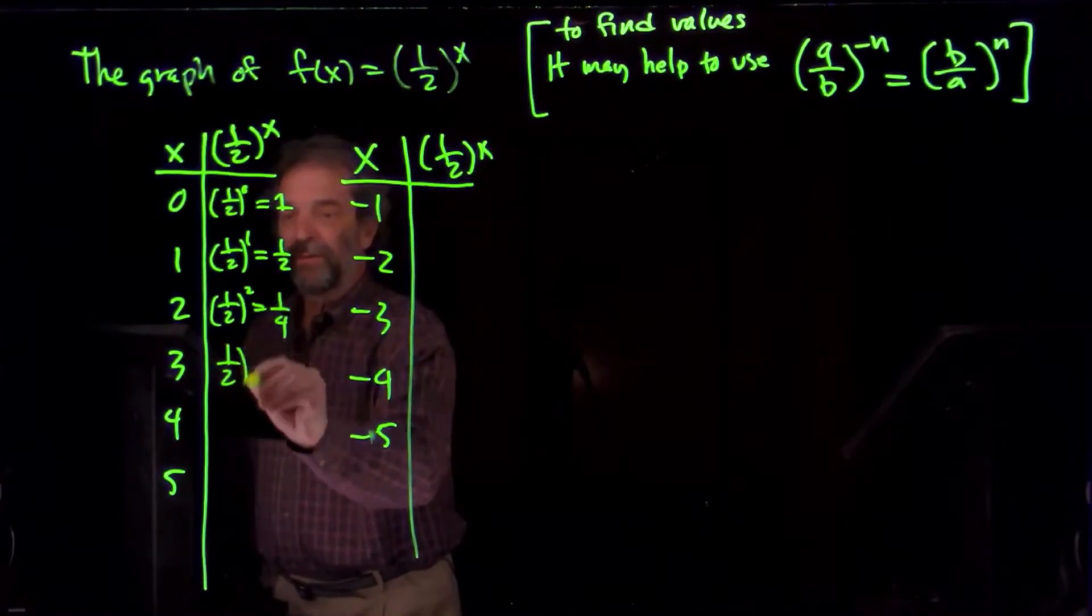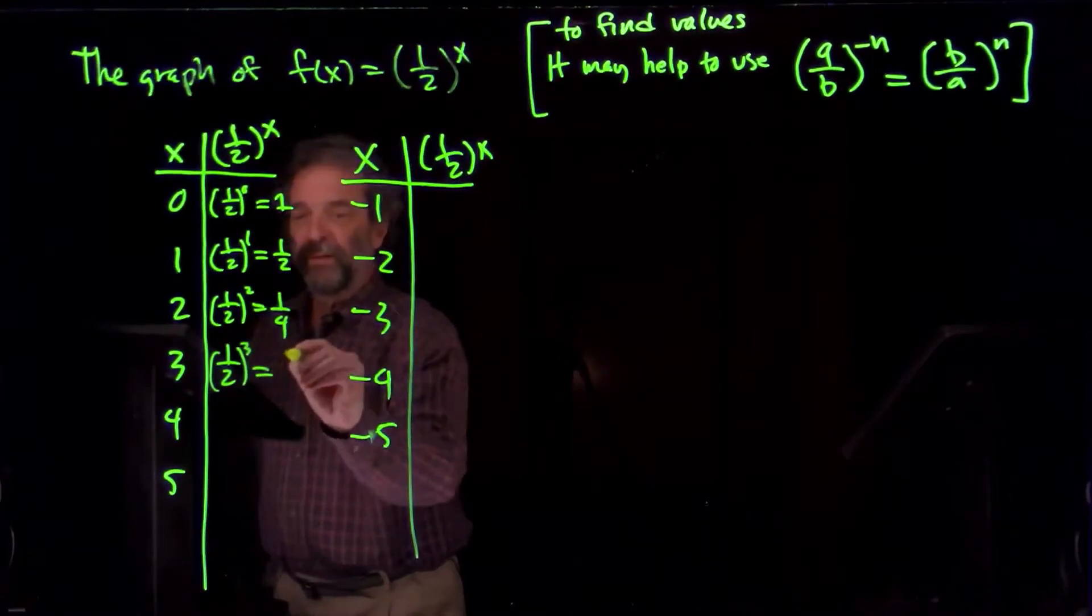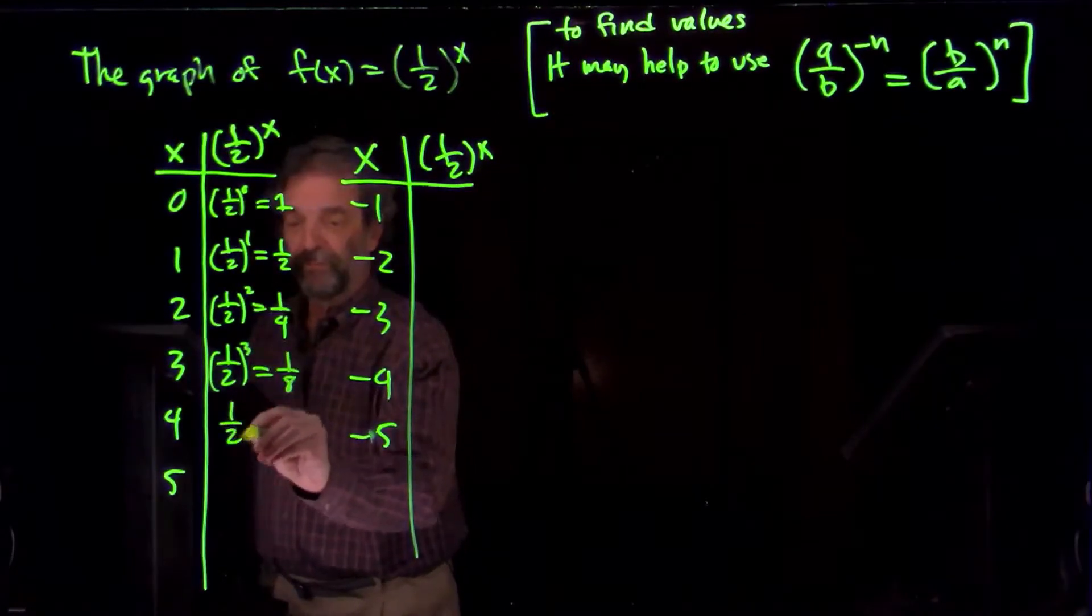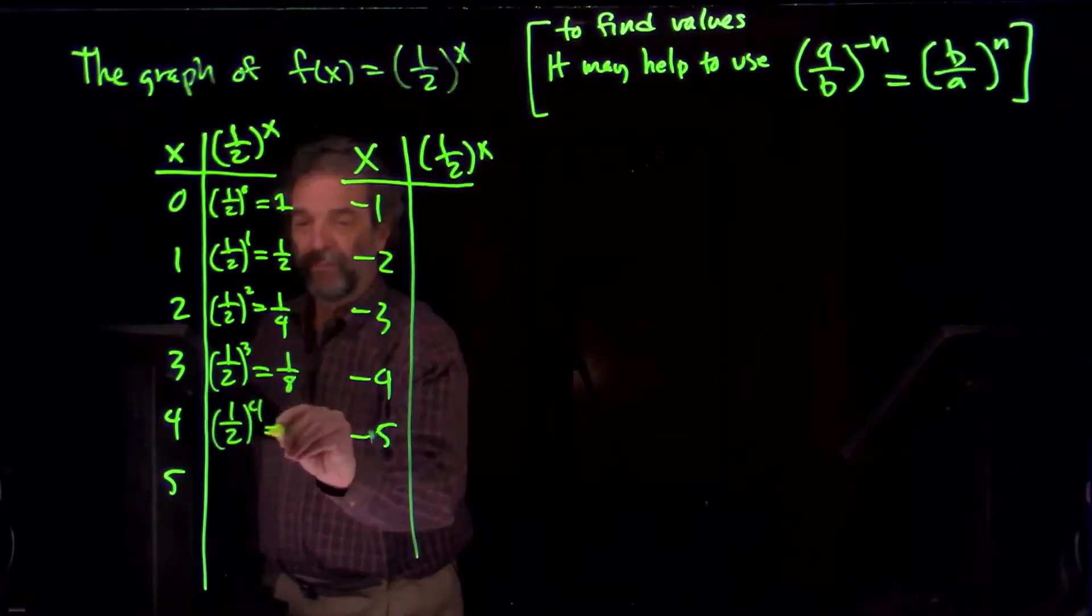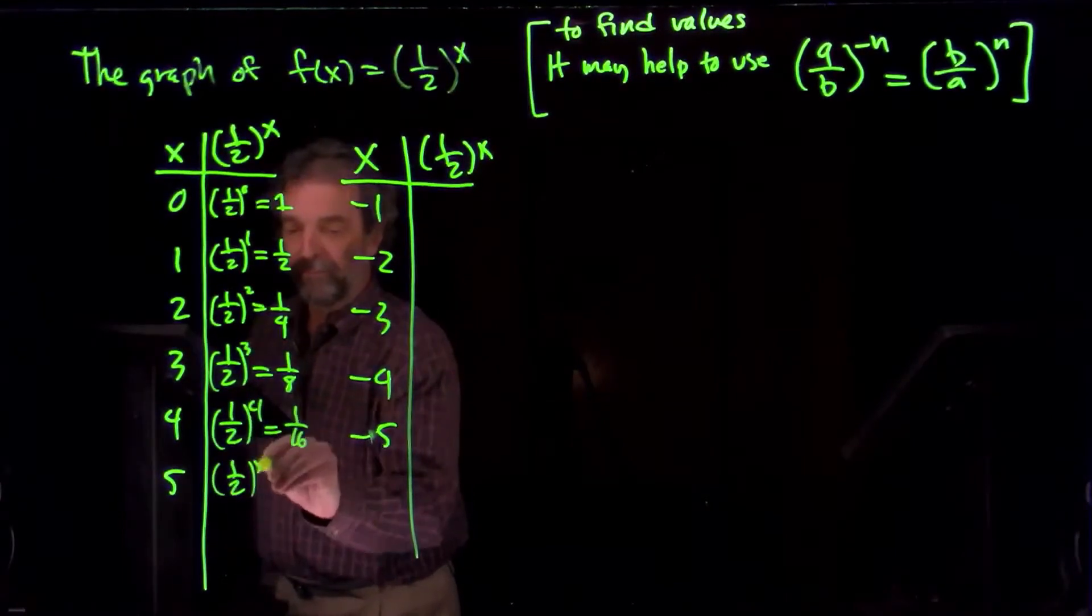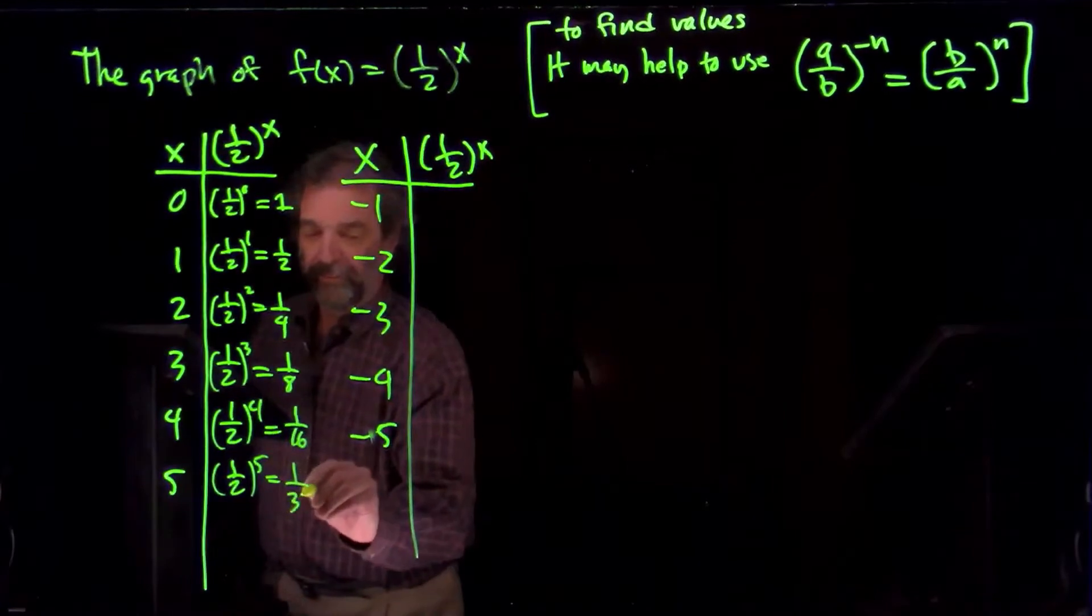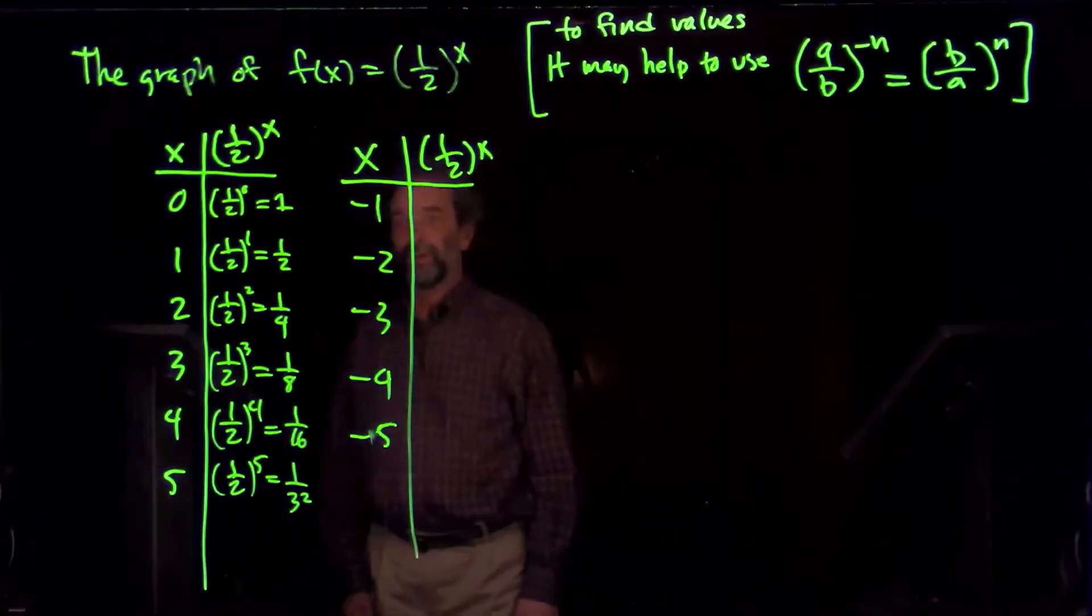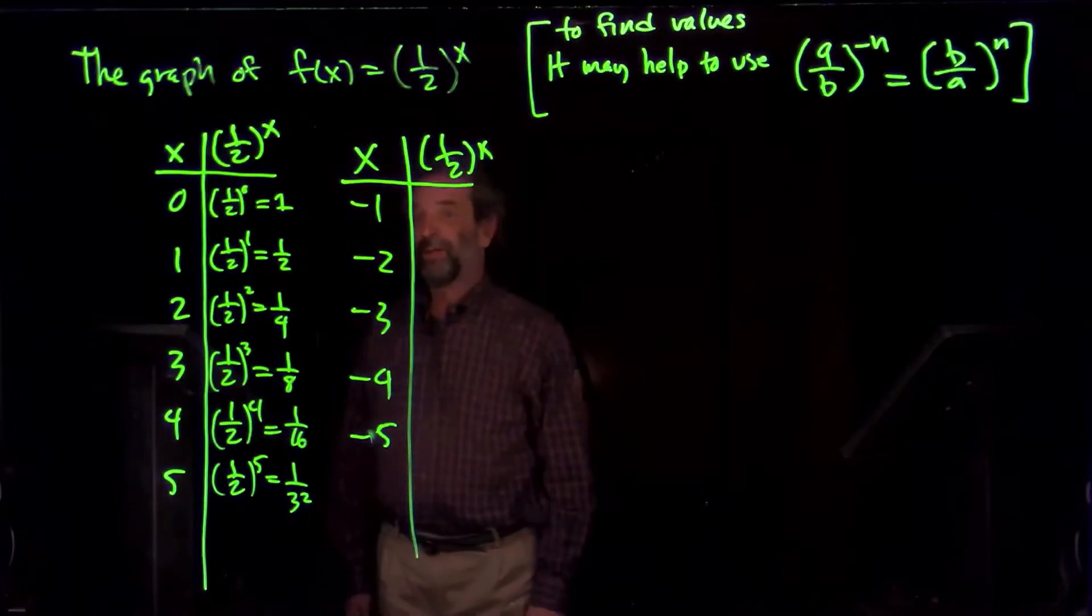Now I've got one-half cubed, one-eighth, 1 cubed over 2 cubed. So we have one 32nd for one-half to the 5th. We recognize those numbers, 2, 4, 8, 16, 32 as the powers of 2, but now they are down in the denominator.